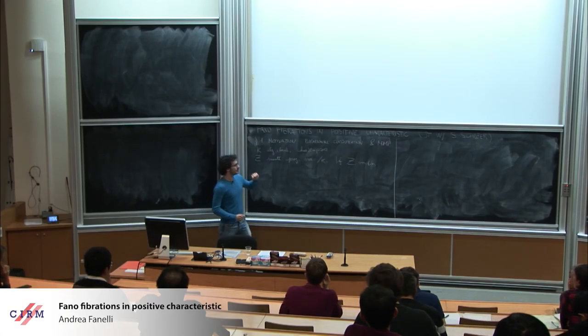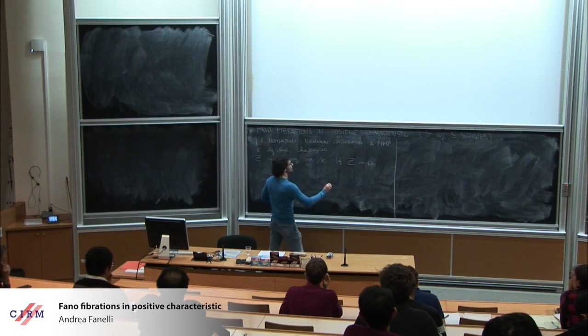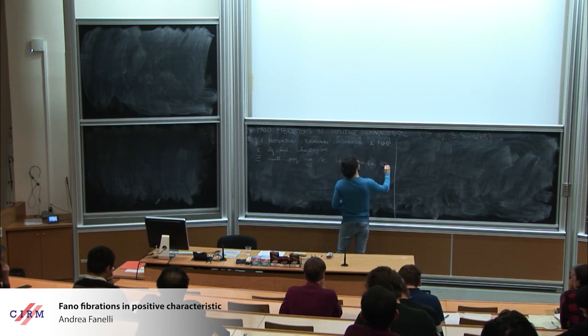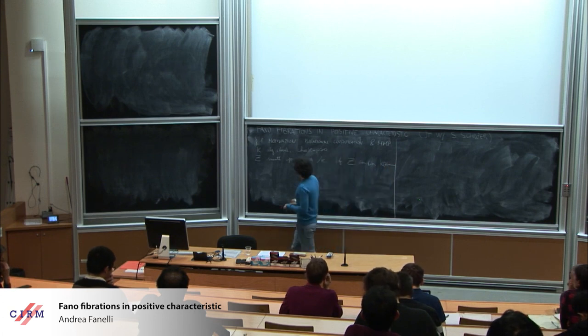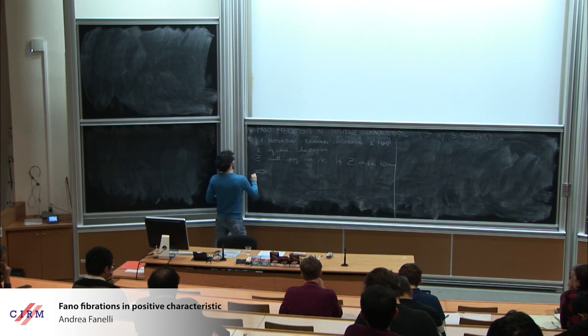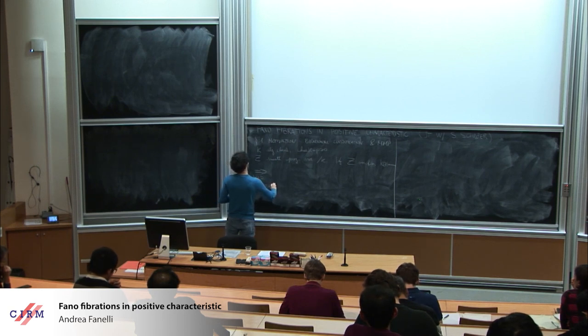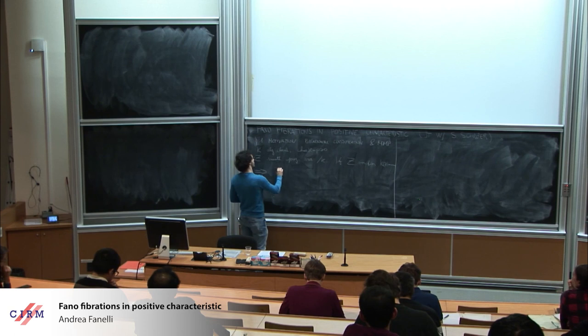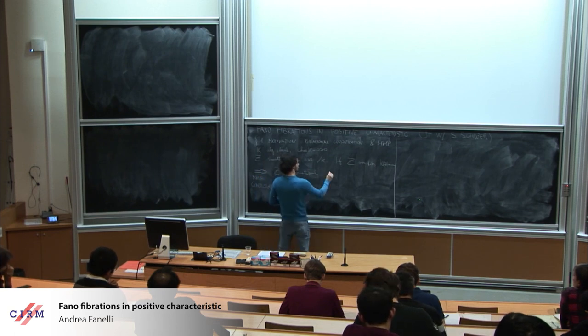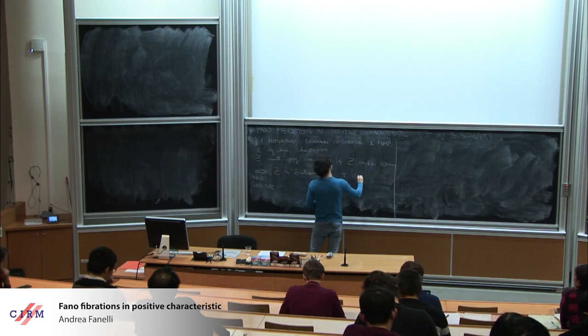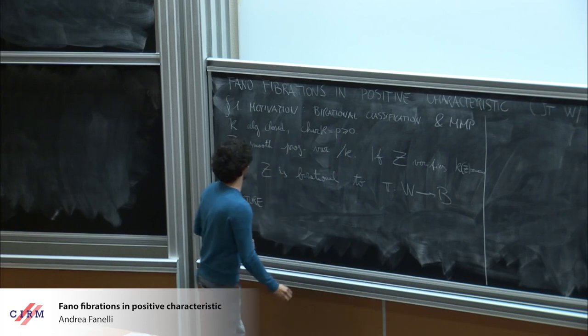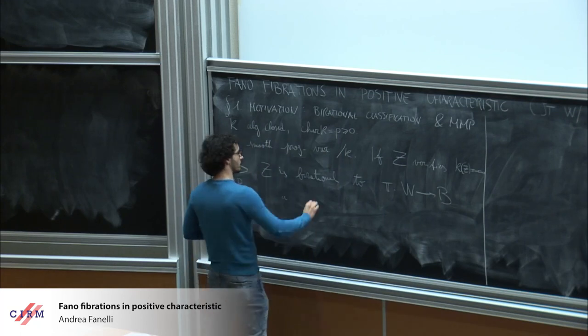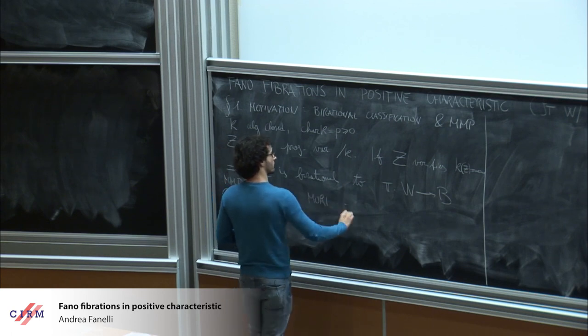Okay, so I was saying, it verifies Coderre dimension minus infinity, then the MMP conjecture. I will say something about this later. It implies that Z is irrational to pi from W to B, which is, so I will write it as Mori final vibration.